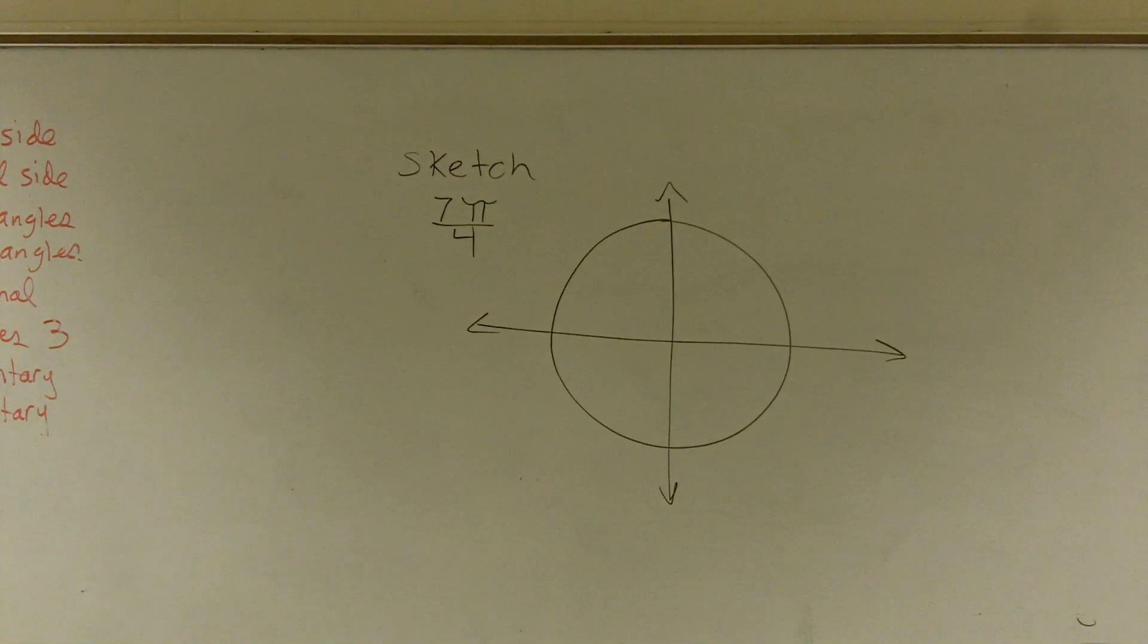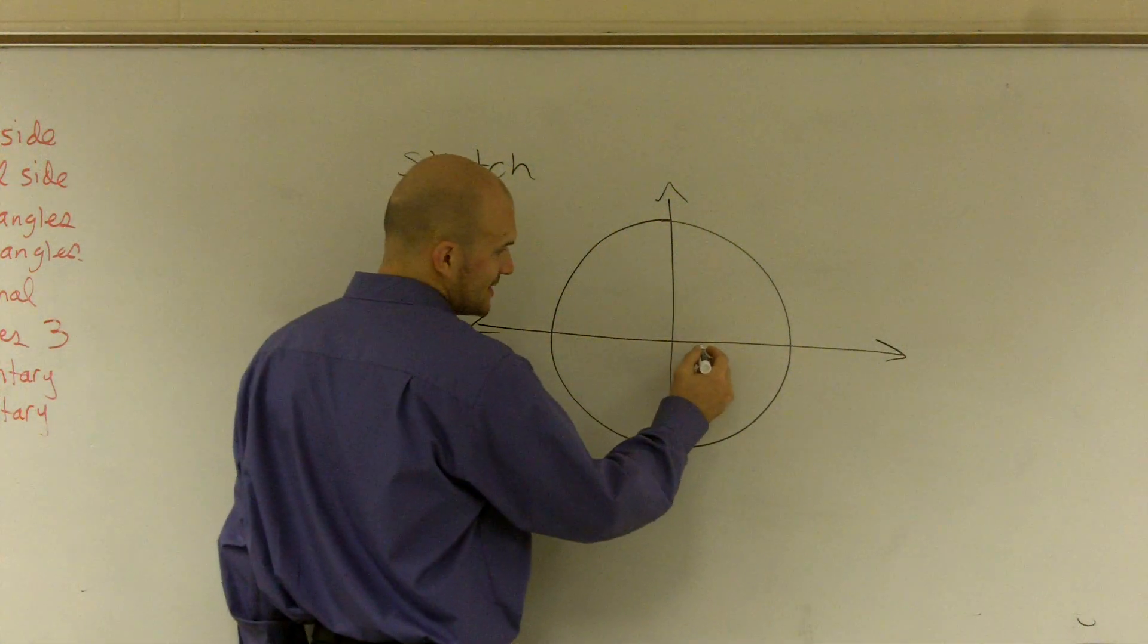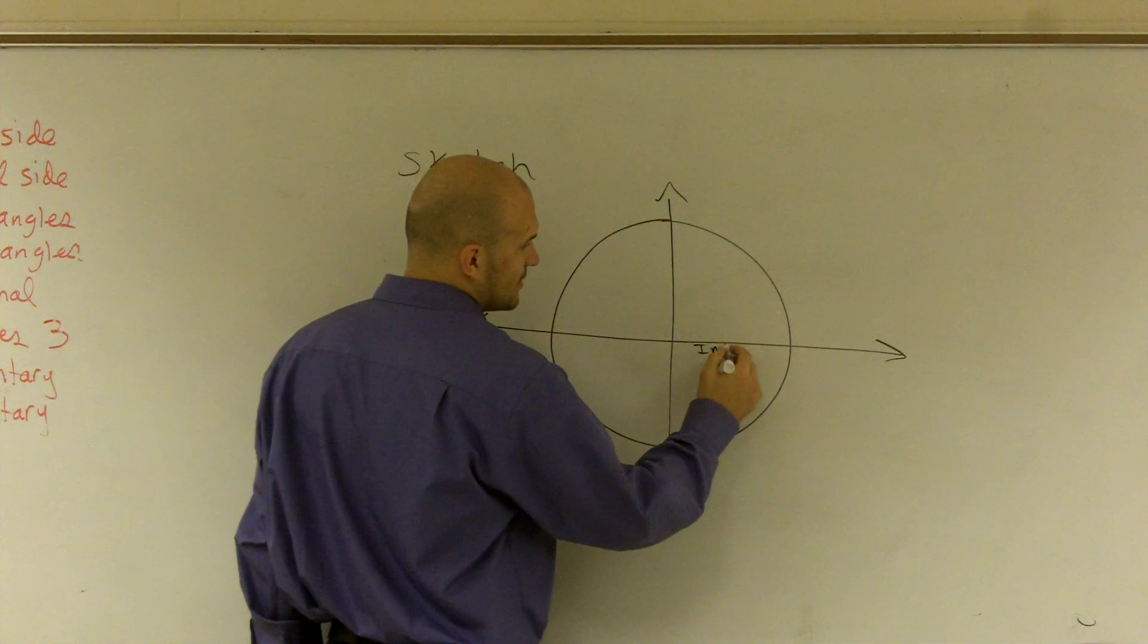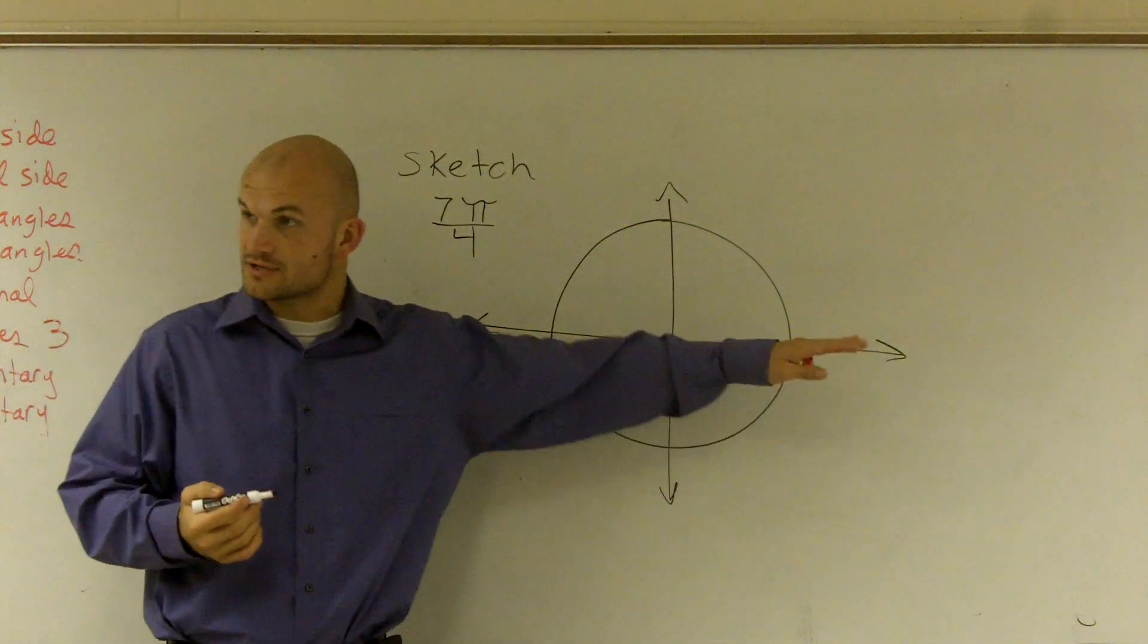Alright, if I wanted to sketch 7π over 4, the main things I'm going to remember is, and I'll just keep on saying this until you guys get on board with it, you're going to start on this side right here. This is your initial side. You're always going to start an angle here.